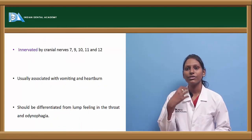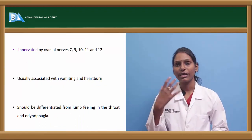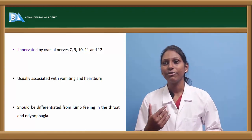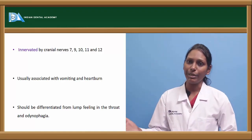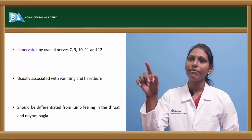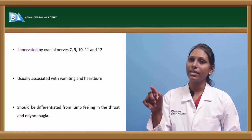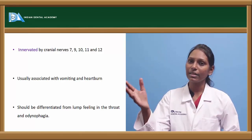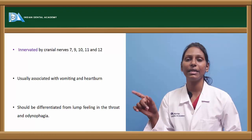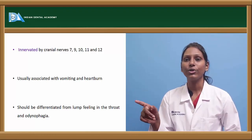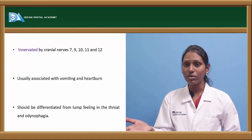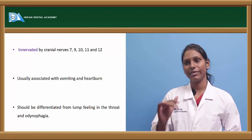Normally these structures are innervated by cranial nerves 7, 9, 10, 11, and 12. Remember this, because whenever any defect occurs in these cranial nerves — 7, 9, 10, 11, and 12 — this will lead to paresthesia of that region, which may also cause dysphagia.